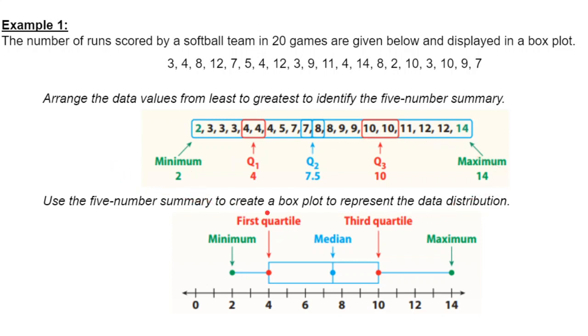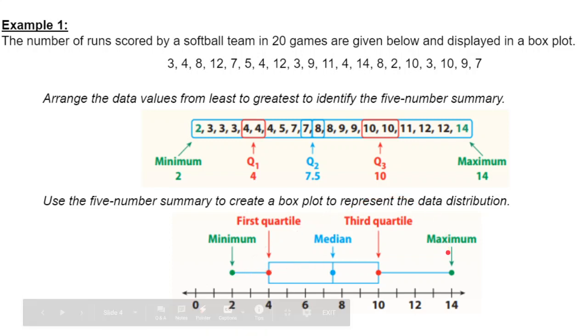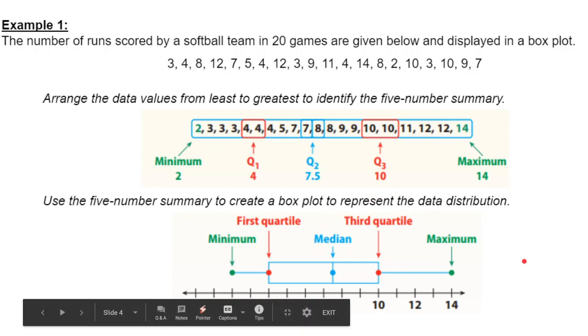The reason why they call it a box plot is because from the first quartile to the third quartile, they frame it as a box, and then they have the median, whatever it lies within that rectangle or box. And your minimum and your maximum. Pretty straightforward. I'm going to leave this here for a second just so you can see it, take it in.